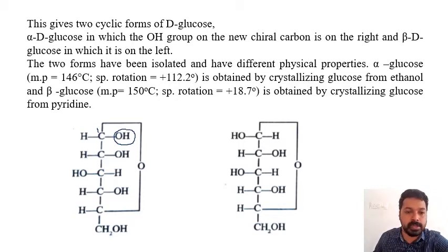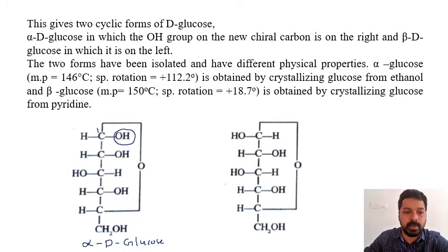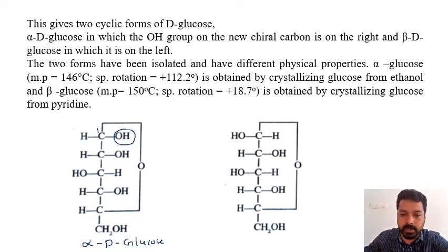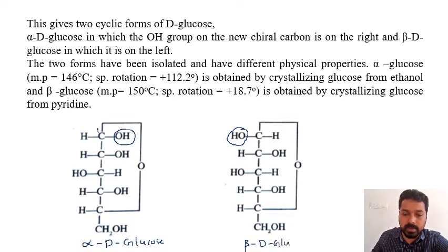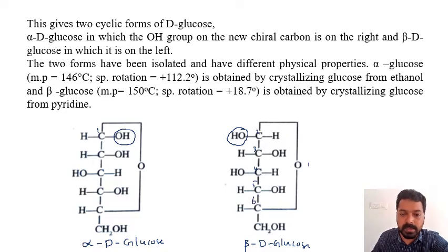Such a type of glucose — where the OH at C1 is on the right-hand side — is known as alpha-D-glucose. If the OH is on the left-hand side, it is called beta-D-glucose. This forms a cyclic structure with a six-membered ring: carbons one, two, three, four, five, and the ring oxygen.